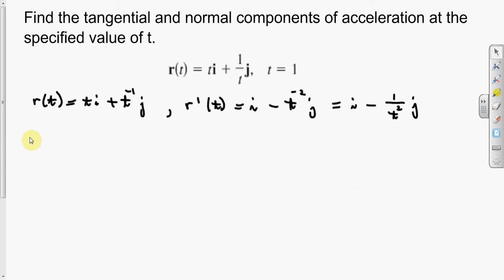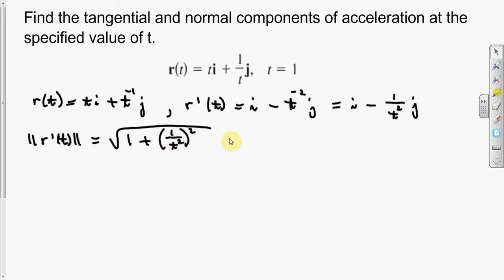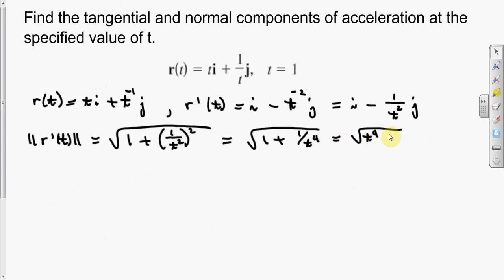We find the norm of R prime of t. That's the square root of 1 plus one over t squared, all squared. So this is the square root of 1 plus one over t to the fourth, which equals the square root of t to the fourth plus one, all over t squared.